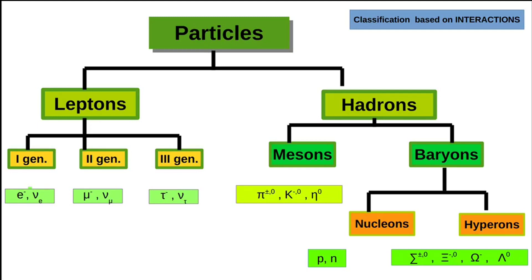Hadrons, which experience strong interactions, are divided into mesons and baryons. The main difference between mesons and baryons is their quark structure: mesons have a quark–antiquark pair (q q-bar), and baryons have three quarks or three antiquarks. Examples of mesons include pions, kaons, and etas. Under baryons, you have nucleons — protons and neutrons — and hyperons, which are baryons heavier than nucleons. The hyperons are sigma, cascade, omega, and lambda.